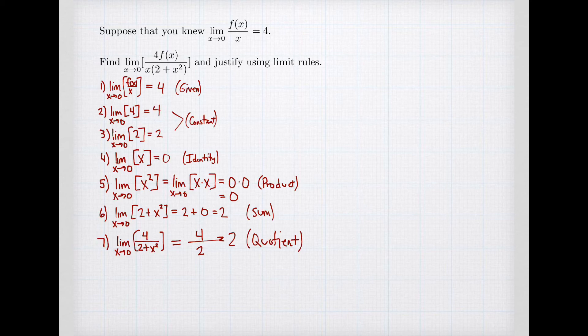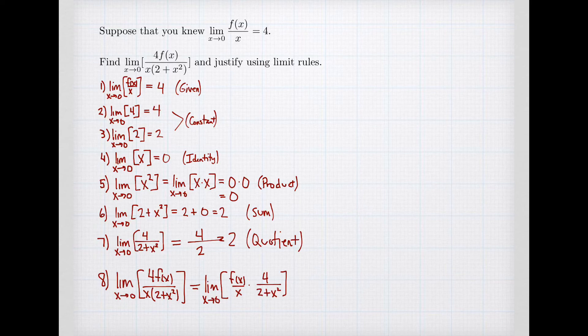We're almost done. The last step is to multiply our two results. The limit of 4f(x) / [x(2+x²)] is rewritten as the limit of [f(x)/x] times [4/(2+x²)]. We already know both limits: f(x)/x has limit 4, and 4/(2+x²) has limit 2. By the product rule, the final answer is 4 times 2 = 8.